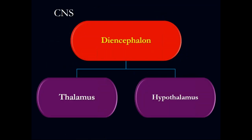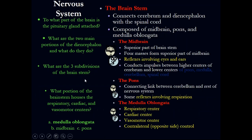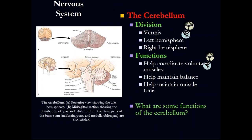The diencephalon contains the thalamus and the hypothalamus. The brain stem is divided into midbrain, pons, and medulla oblongata. You must remember that the medulla oblongata contains the respiratory center, cardiovascular center, and basal motor center — and that is where the crossover of nerves occurs. So a stroke on the right side of the brain affects the left side of the extremities.